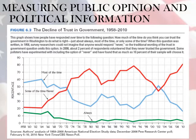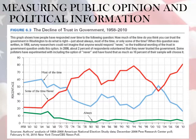Here is figure 6.3, the decline of trust in government from 1958 to 2010. Take a moment to look over the graph and how it shows how people have responded over time to the question: how much of the time do you think you can trust the government in Washington? When this question was written in 1958, survey researchers couldn't imagine that anyone would respond 'never.' By 2008, 2% of respondents volunteered that they never trusted the government. Some pollsters have experimented with including the option of 'never' and found that as much as 10% of their sample will choose it.